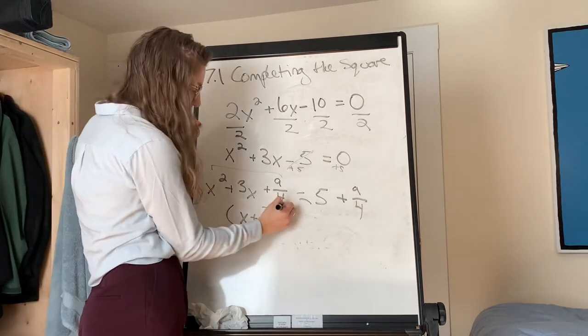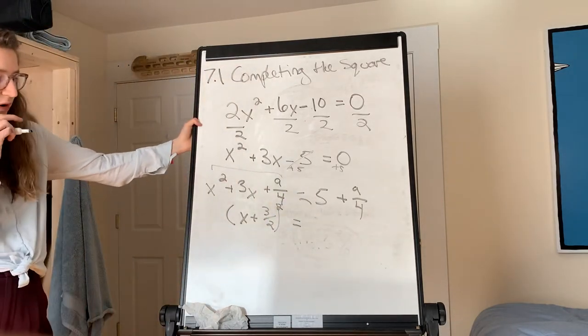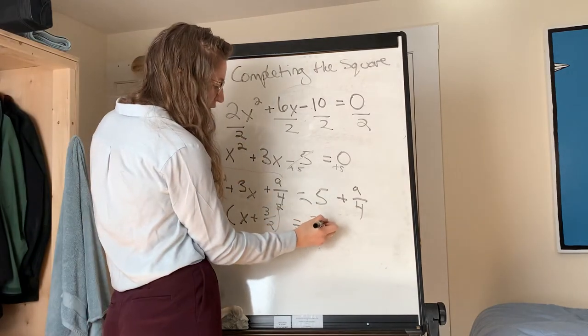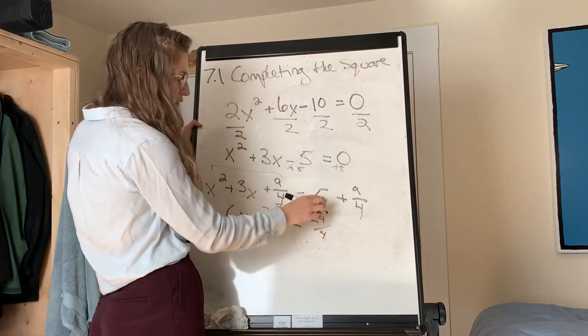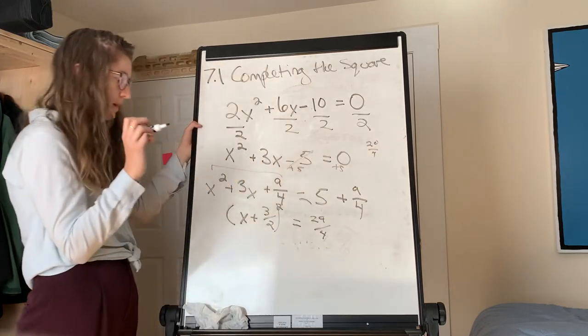Then on the other side, oh and it's squared, obviously. Then on the other side, you've got 5 plus 9 fourths, which I think is 29 fourths, right? Because you can rewrite 5 as 20 fourths. Yep. Good.